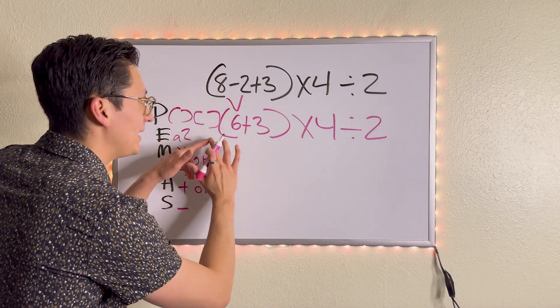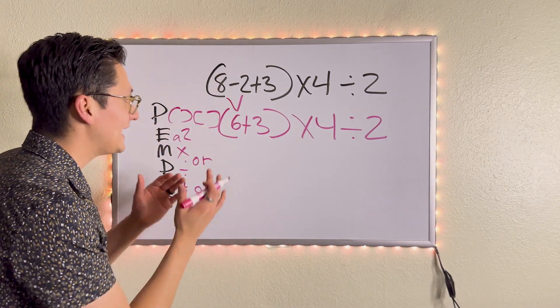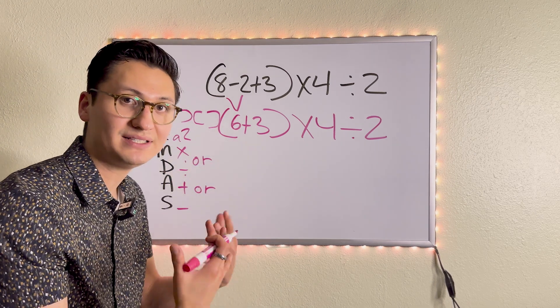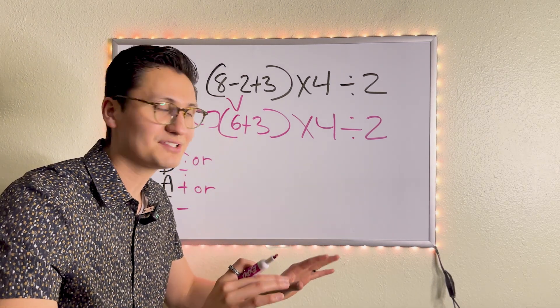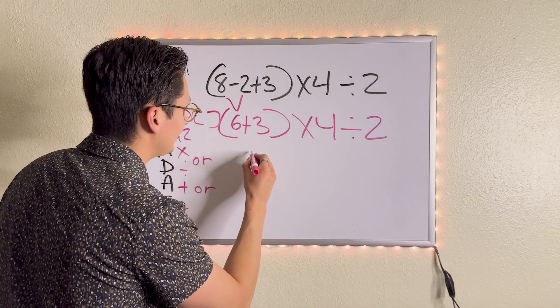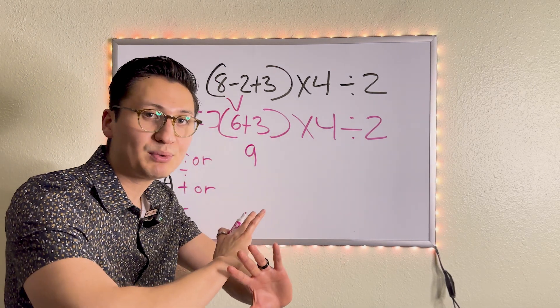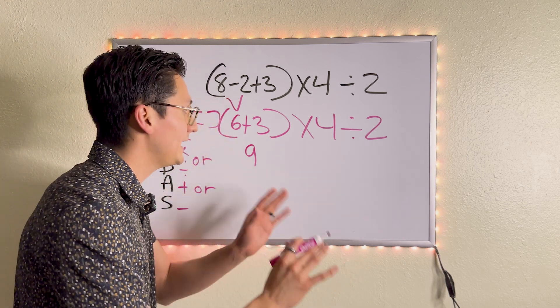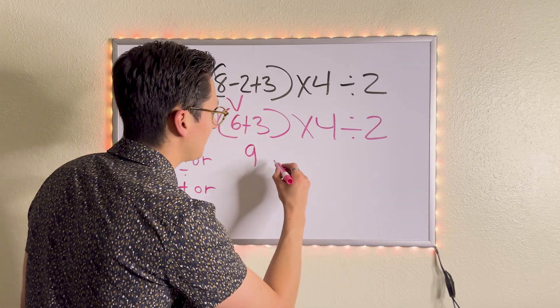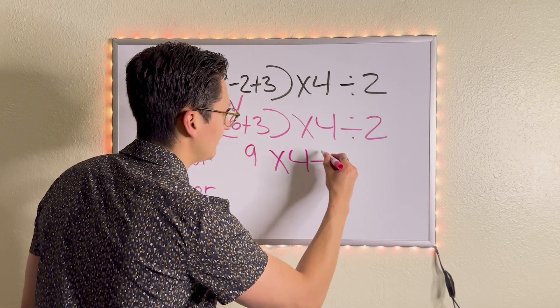So eight minus two is six. I write down everything else. I bring it down so that I can stay organized and not miss a single number. So now do I have parentheses? Yes, I do. Inside the parentheses, I only have addition. So that's all I need to focus on. Six plus three is nine. There's nothing left to do in the parentheses. So I don't have to bring the parentheses down, but I do have to bring down the rest of the numbers, which is times four divided by two.